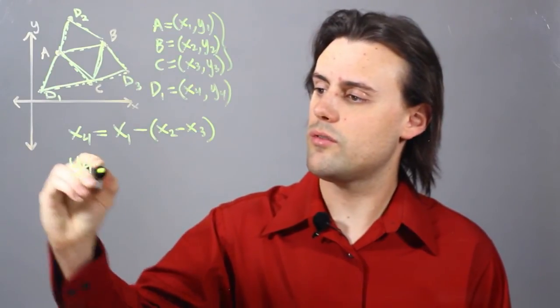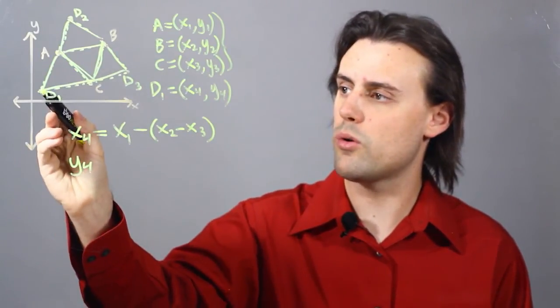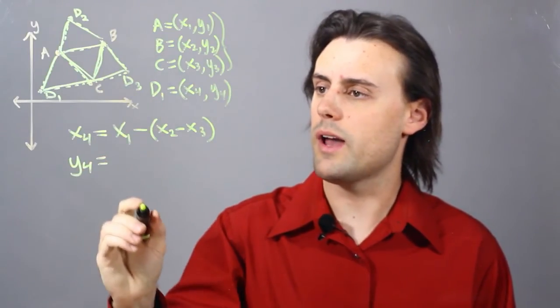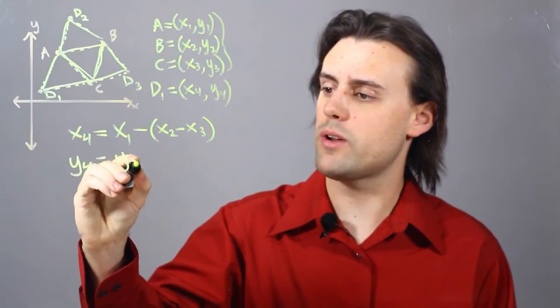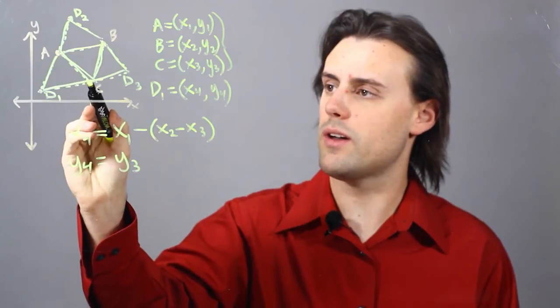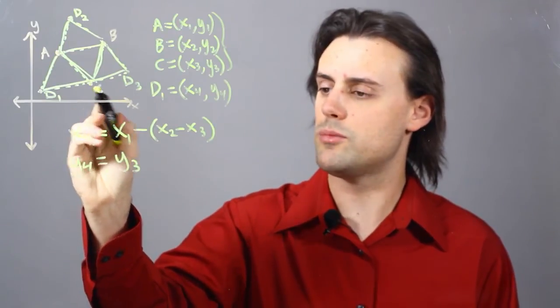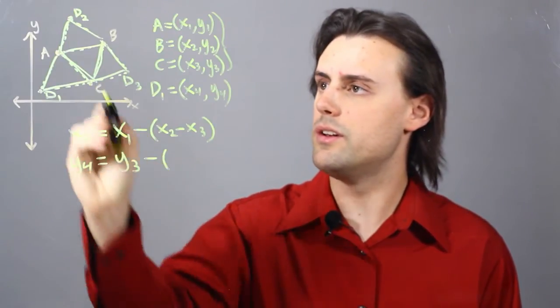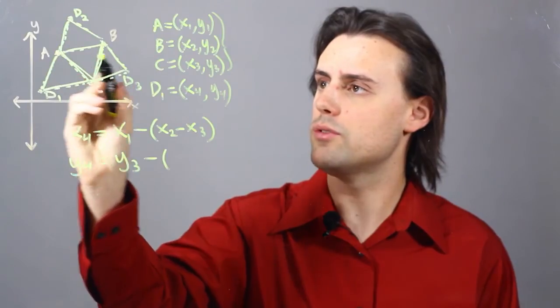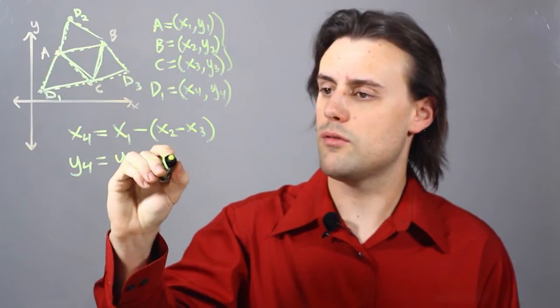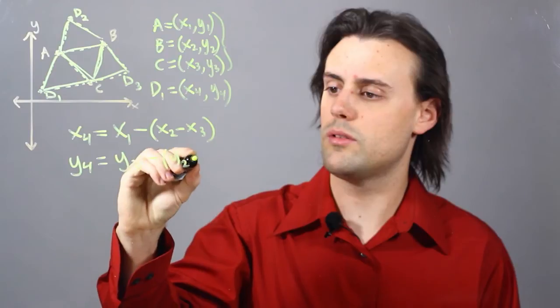Likewise, for the vertical component of the coordinate of D1, I would have y3, which is the y value for C, and I would subtract from that the difference between the y values of B and A, which would be equal to y2 minus y1.